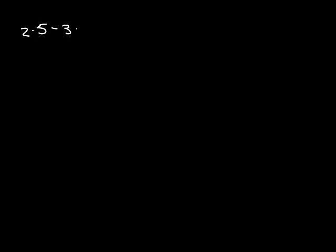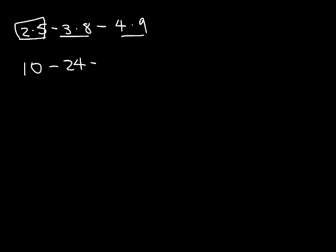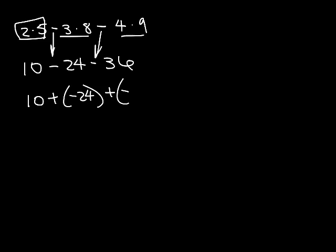Now we get a monster in example 4. We have 2 times 5, subtract 3 times 8, subtract 4 times 9. Remember PEMDAS — do the multiplication first. 2 times 5 is 10, 3 times 8 is 24, 4 times 9 is 36. Notice I brought the negatives down and just multiplied the numbers. Now I'm going to write them as a plus: 10 plus negative 24 plus negative 36.